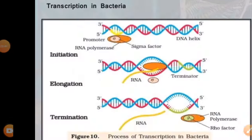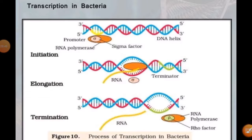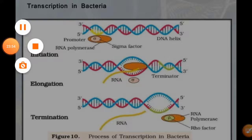Students must prepare about this whole process because it is very important for your examination. You must memorize the initiation, elongation, termination, and the function of RNA polymerase, promoter, sigma factor, and rho factor. Thank you.